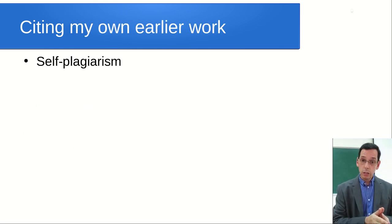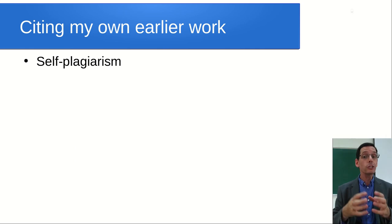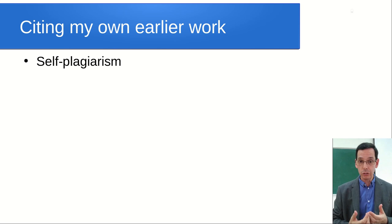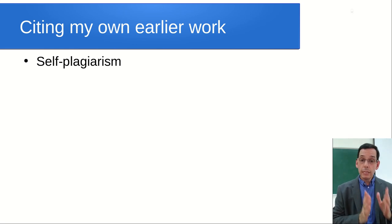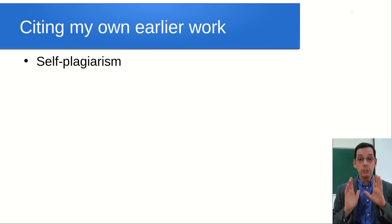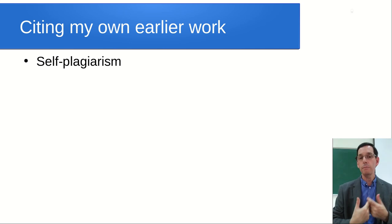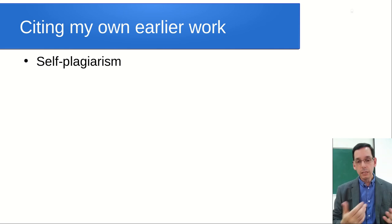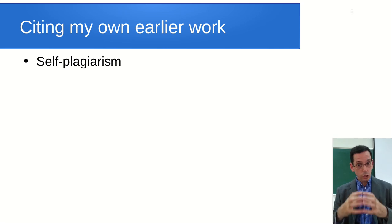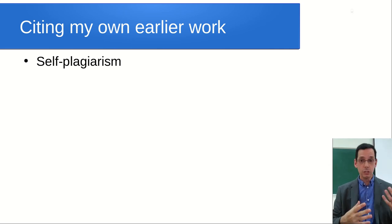If you have done earlier work that you've submitted previously and you want to use something from it, you actually need to cite that too. There's a thing called self-plagiarism - plagiarizing yourself. In university, you're expected to do your own work for each assignment. If you really need to use something you've used before, you need to cite it as if you published it at the time you submitted it. You need to make it very clear that what you're including in this current assignment comes from one of your previous assignments, so you don't run into the problem of plagiarism.